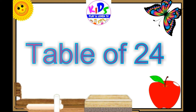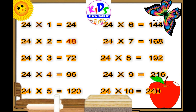24 1s are 24, 24 2s are 48, 24 3s are 72, 24 4s are 96, 24 5s are 120.